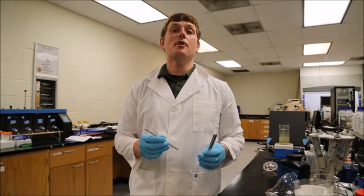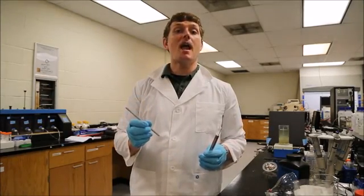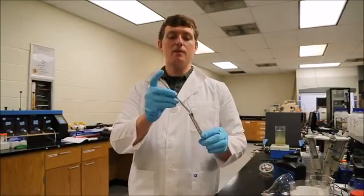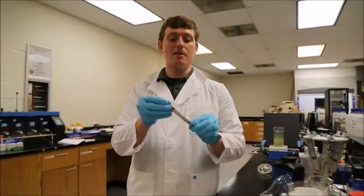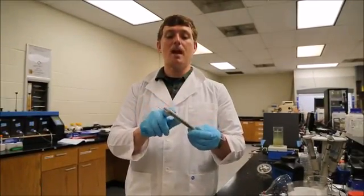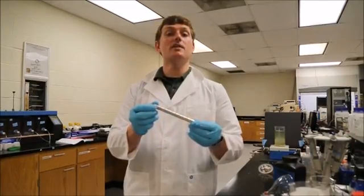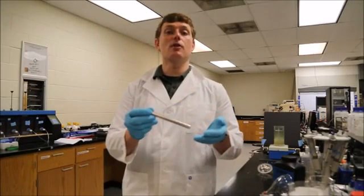The electrodes that we will be using today are an aluminum anode and a steel cathode. The aluminum anode fits inside of the steel cathode like this, and you'll notice that the cathode has holes in it to allow the dirty water access to both electrodes.